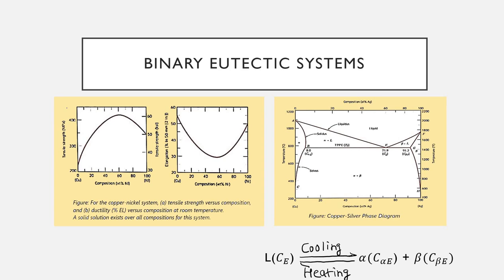Binary eutectic systems: the copper-silver system is a common example of a binary eutectic phase diagram. Three single-phase regions are found: alpha, beta, and liquid. The alpha phase is a solid solution rich in copper, with silver as a solute and FCC crystal structure. The beta phase also has an FCC structure but with copper as a solute. The alpha and beta phases include pure copper and pure silver respectively.